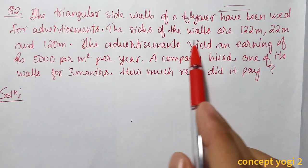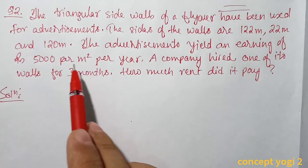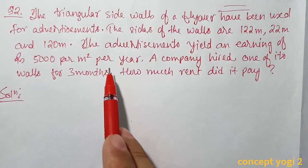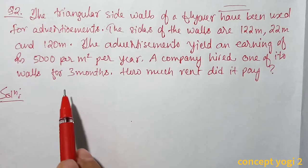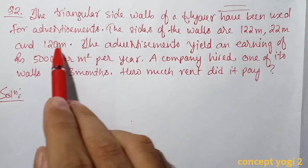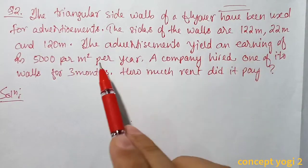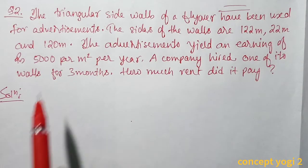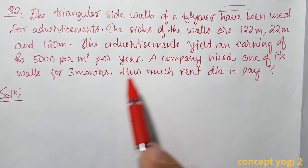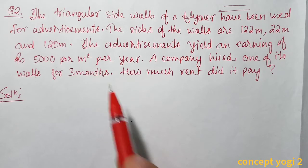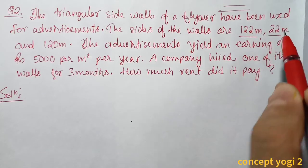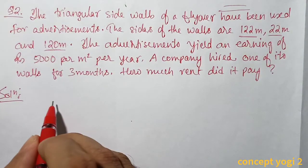Question number two: The triangular side walls of a flyover have been used for advertisement. The sizes of the walls are 122 m, 22 m, and 120 m. The advertisement yields earnings of ₹5000 per meter square per year. A company hired one wall for three months — how much rent did it pay? Here a = 122 m, b = 22 m, c = 120 m.